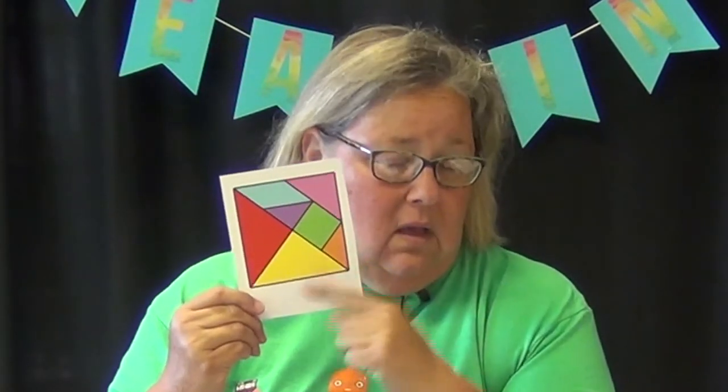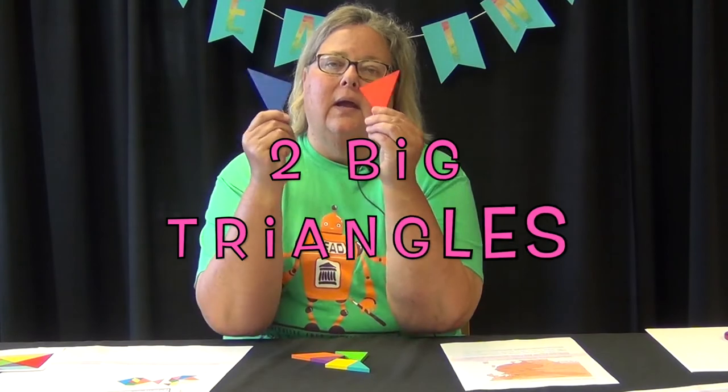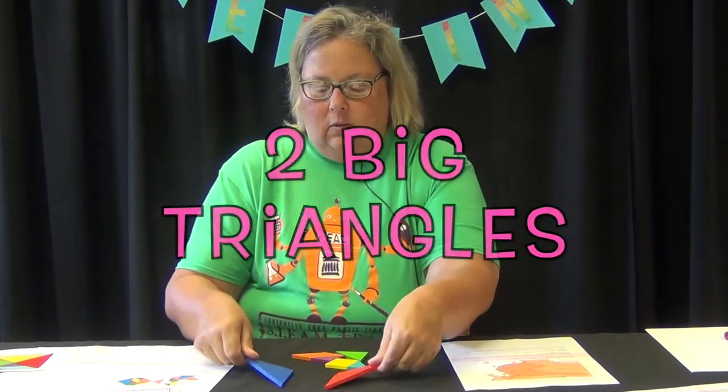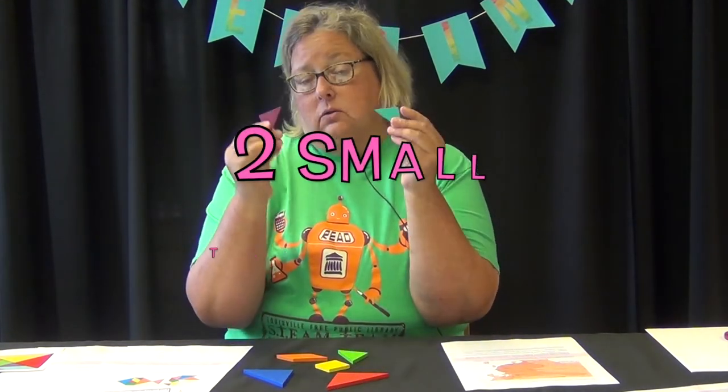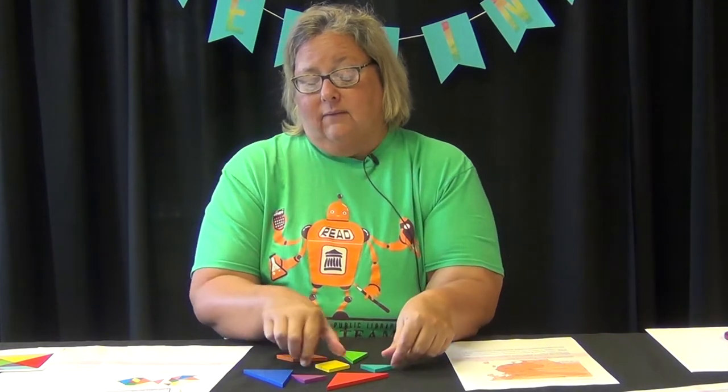Very interesting. Let me show you. This is a tangram all put together. Now once you take the pieces apart, there are seven pieces and all seven pieces are always the same. So you have two big triangles, you have two small triangles, you have a square.